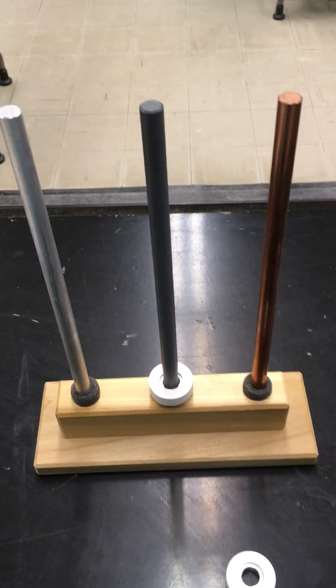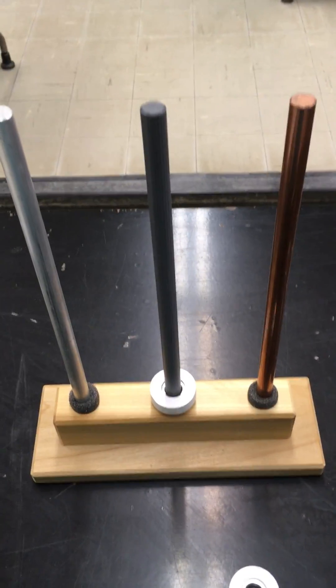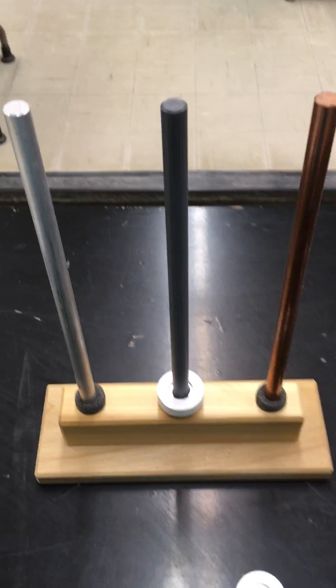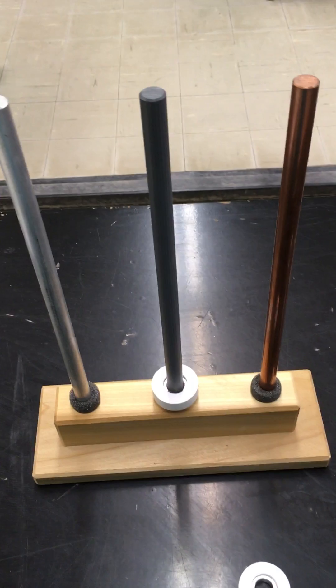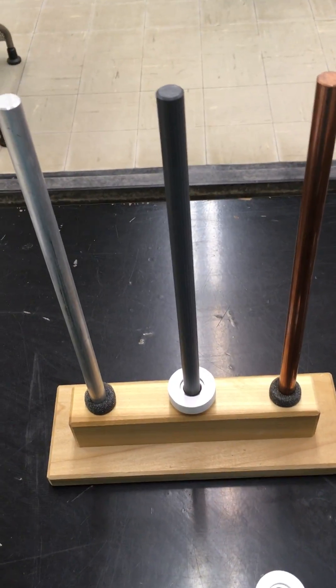I want to introduce Lenz's Law, which tells us that if you try to change the magnetic flux, the magnetic field lines, through some closed loop, you will induce a voltage around that loop.